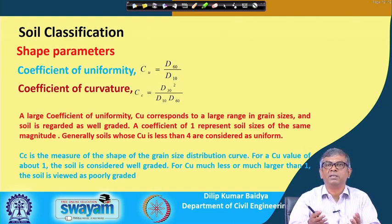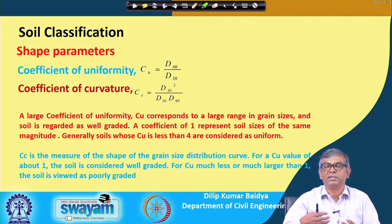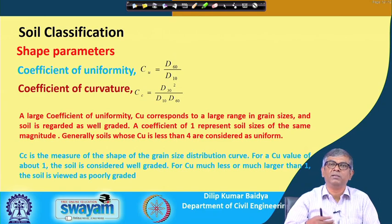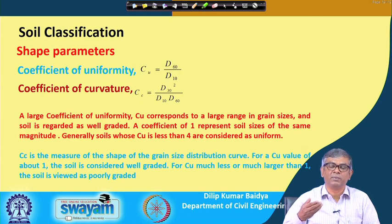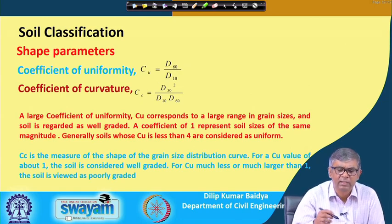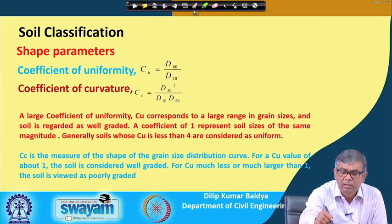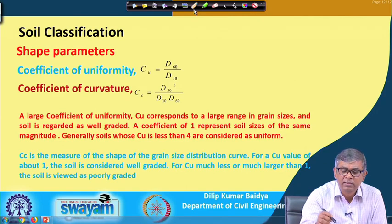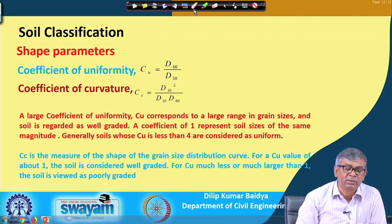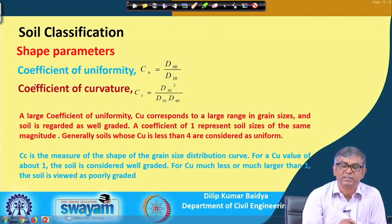You have the soil mass but do not know what size particles and what percentage are present. By the wash method, the soil retained on the 75 micron sieve is used for grain size analysis, and the portion passing 75 microns is used for hydrometer analysis. These are combined to get the final curve, and based on that curve shape we can also assess the soil type.